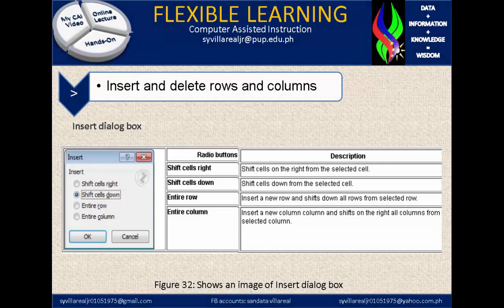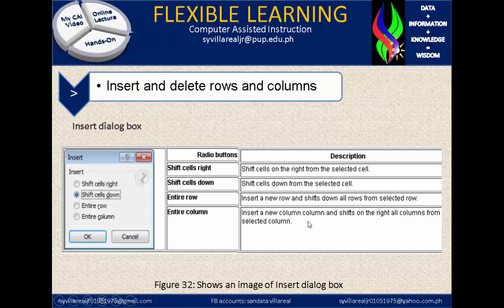Figure 32 shows an image of the Insert Dialog Box. You can click from the options under the Insert Dialog Box. If you click Shift Cells Right as a radio button, it shifts cells to the right from the selected cell. Shift Cells Down shifts cells down from the selected cell. If it's Entire Row, it inserts a new row and shifts down all rows from the selected row. The last option, Entire Column, inserts a new column and shifts all columns to the right from the selected column.